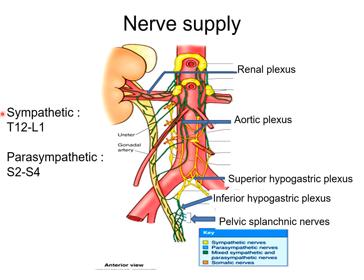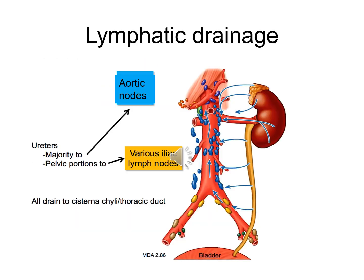Nerve supply of ureter. The sympathetic supply is derived from T12 to L1 spinal segments through the renal, aortic and hypogastric plexus. The parasympathetic supply is derived from S2 to S4 spinal segments through pelvic splanchnic nerves. The sensory fibers travel through both sympathetic and parasympathetic nerves. Lymphatic drainage: the lymph from the ureter is drained into lateral aortic and iliac nodes.